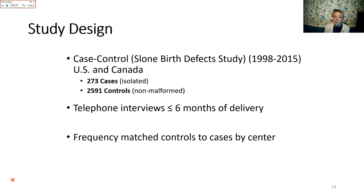We frequency-matched controls to cases based on center, because the ratio of case-to-control ascertainment differed by center through the study design. Center was a strong predictor of case versus control status as an artifact of the design, not a true risk factor for gastroschisis, so we didn't want it to appear that way in the results.